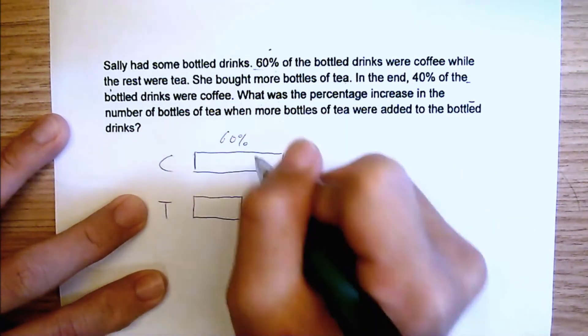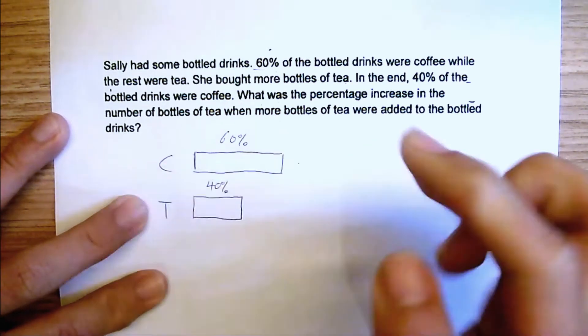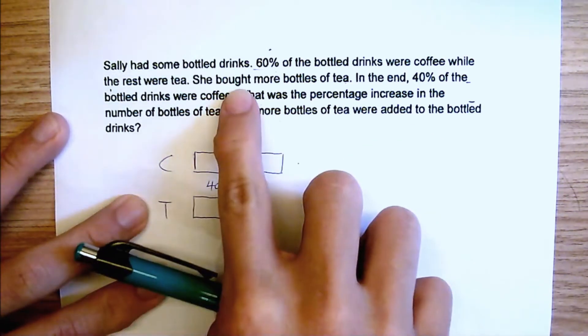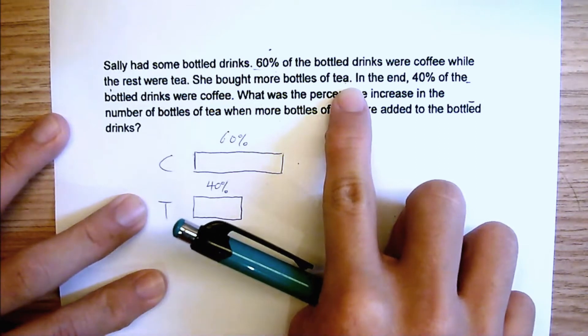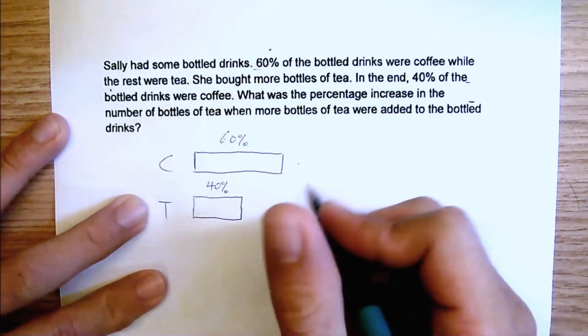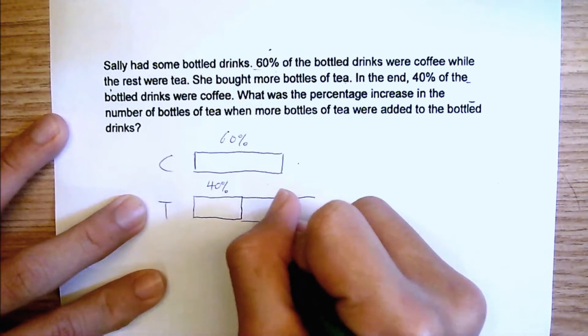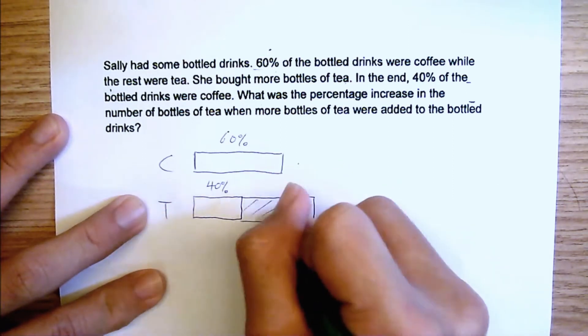So this one is 60% and this one is 40%. Now they said that she bought more bottles of tea. In the end, 40% of the drinks were coffee. If I suddenly increase this amount, so this is the bottle, the additional one.